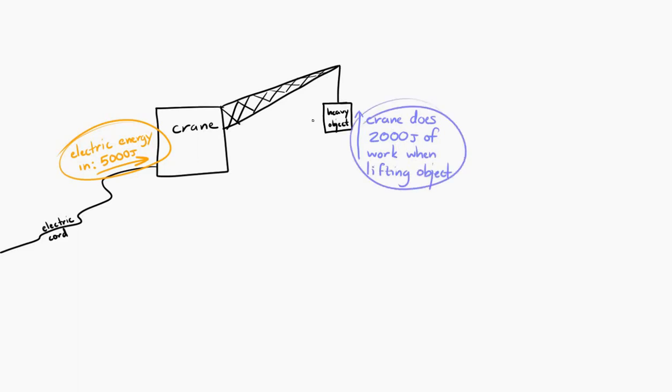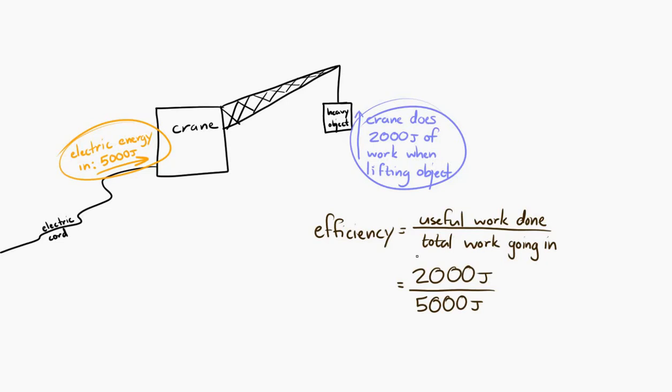Okay. Well, the efficiency is the ratio of the useful work that was done to the total work that went in. Well, the useful work that was done in this situation was lifting the heavy object, the 2,000 joules of work. The amount of work that went in, the total work that was provided to the crane, was 5,000 joules. So the efficiency was 2,000 joules divided by 5,000 joules, or 0.4. Now, it's customary to provide efficiency as a percent, so this would be 40% efficiency.